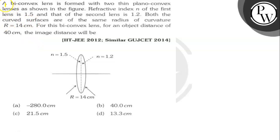Hello, let's read the question. The question says here: A biconvex lens is formed with two thin plano-convex lenses as shown in the figure.